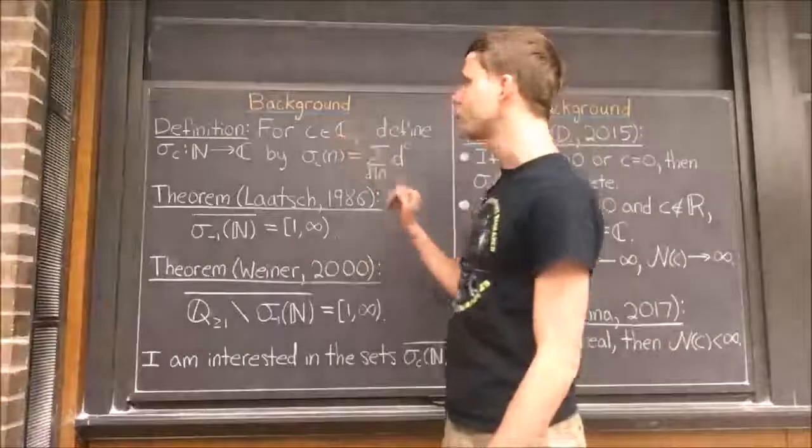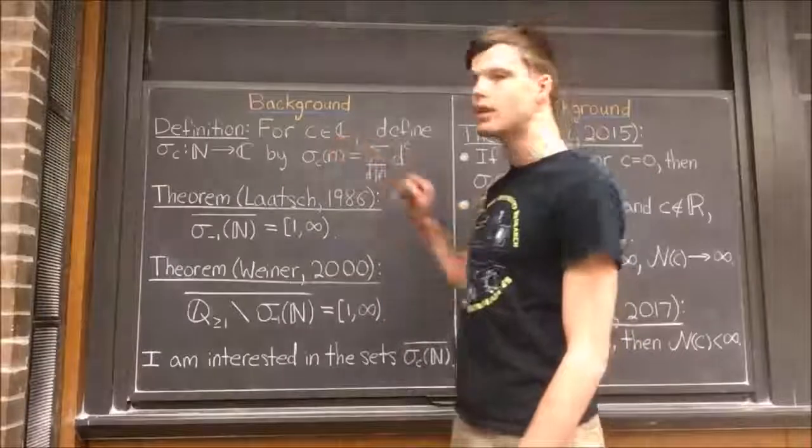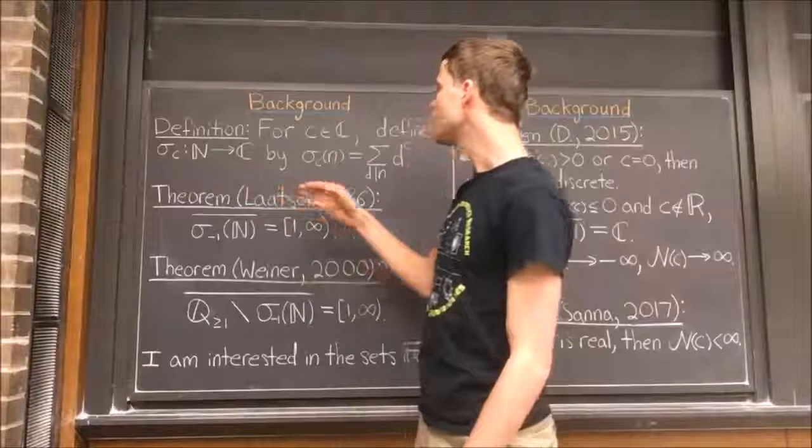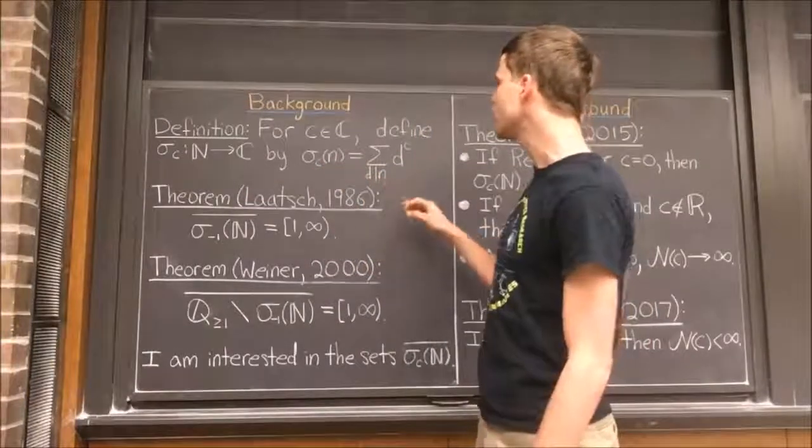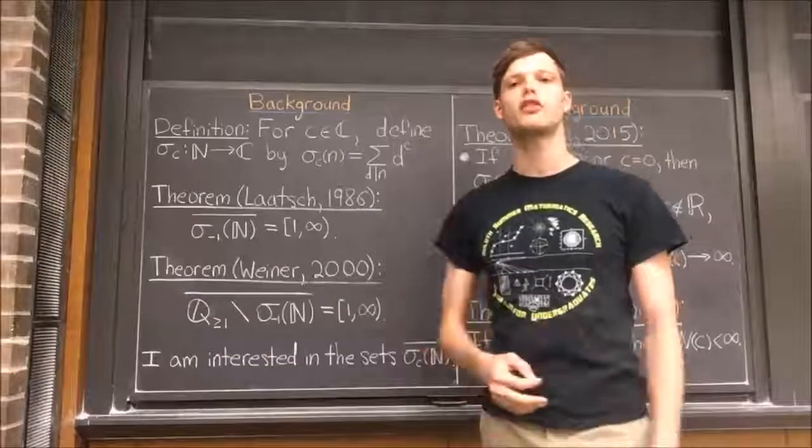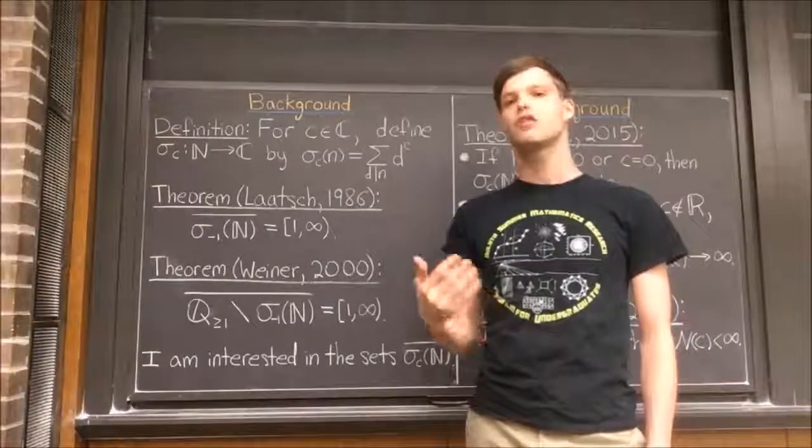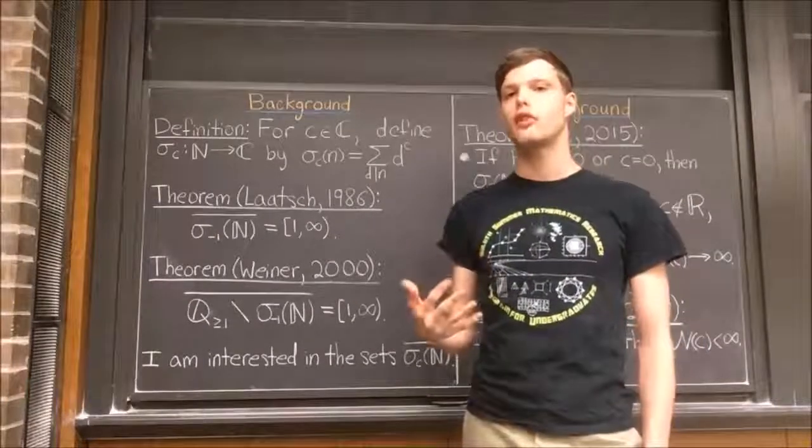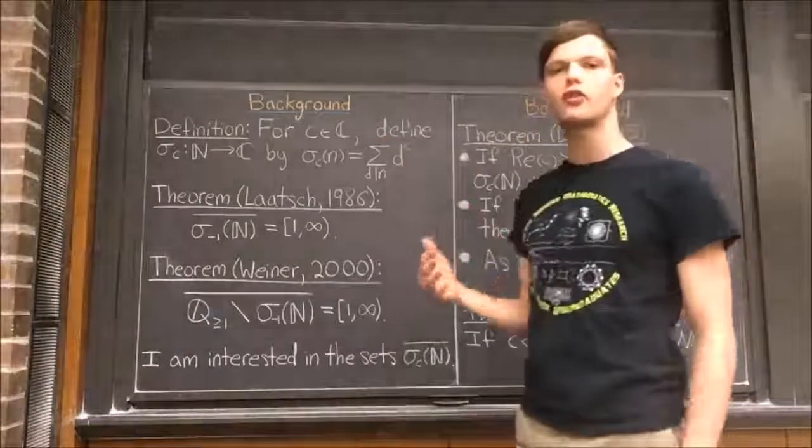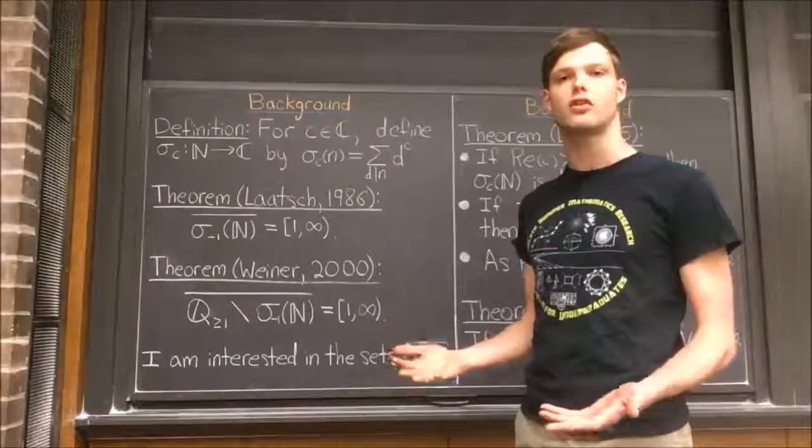This paper is about divisor functions, which are classical number theoretic functions given by this formula. For any complex number c, we can define the divisor function σ_c by saying that σ_c(n) is the sum over d divides n of d to the power of c. The most common and famous divisor functions are σ_0, which yields the number of divisors of a positive integer, and σ_1, which gives the sum of the divisors. But this definition makes sense for any complex number c, and these other divisor functions have received a fair amount of attention, for example, because of their relations to Eisenstein series.